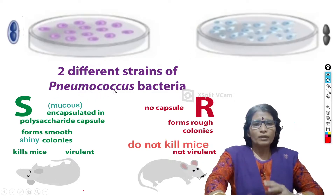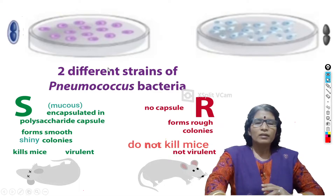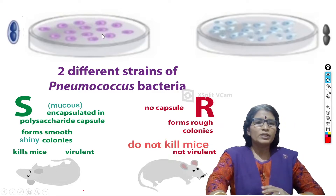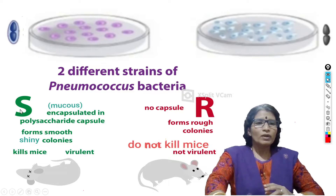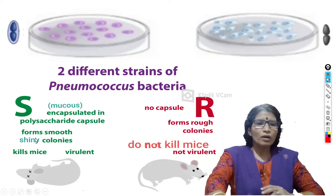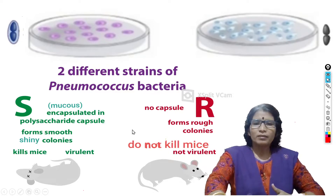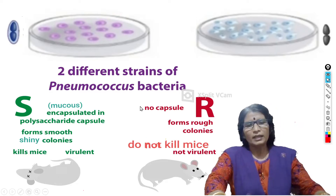When Streptococcus pneumoniae bacteria are grown in a petri dish, smooth bacteria form smooth and shiny colonies, and rough bacteria form rough colonies.